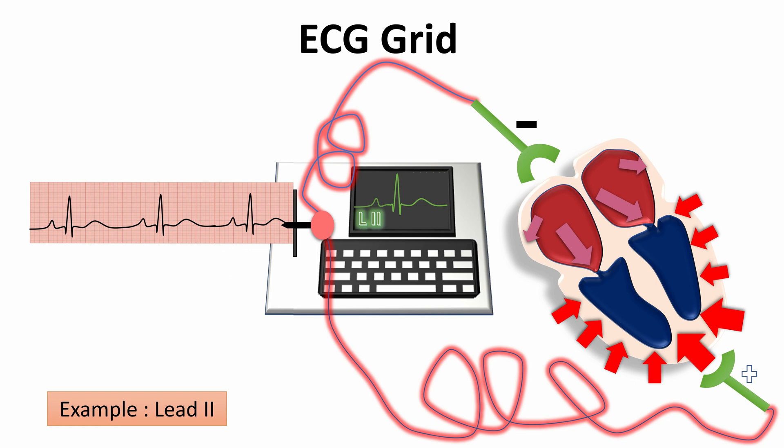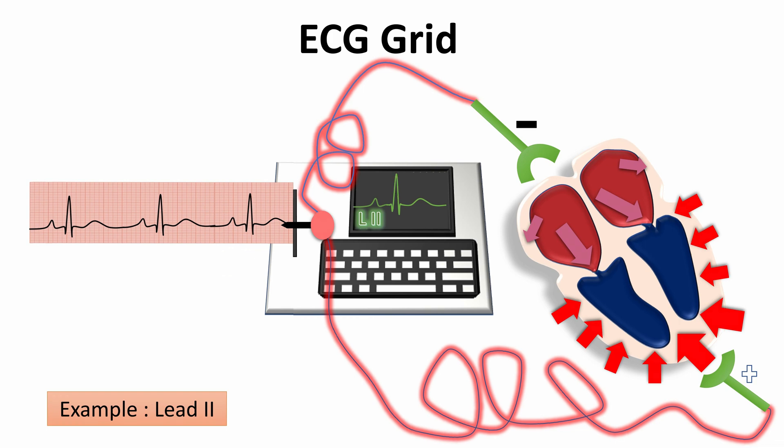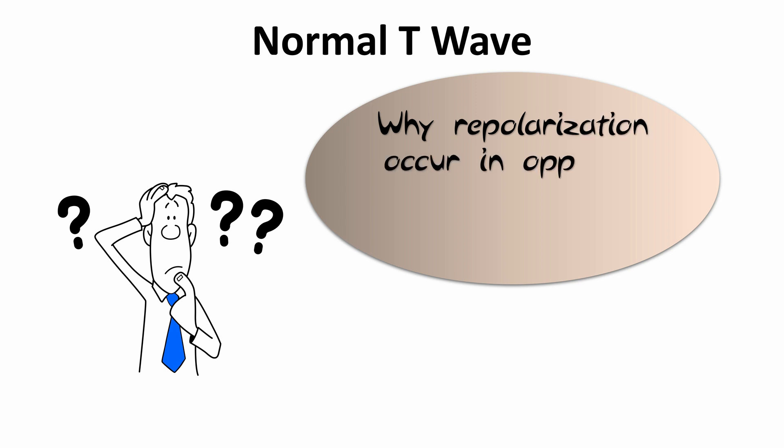So we have finished the ECG grid and the normal P-wave, and the QRS complex and the T-wave values, and we will continue our talking about the normal ECG values in the next videos. And now let's jump to the question of this day. Why repolarization occurs in opposite way to depolarization?